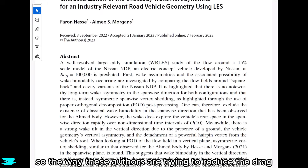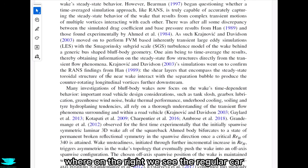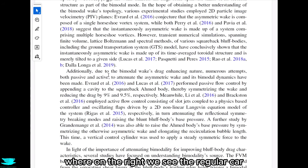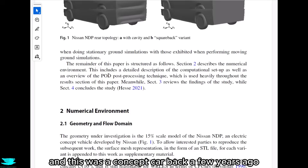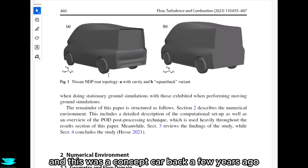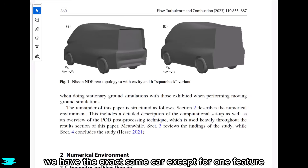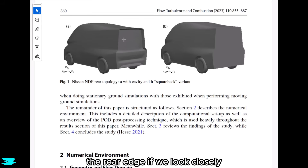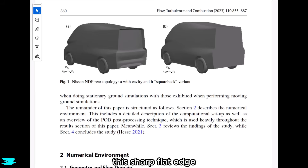The way these authors are trying to reduce the drag of this particular type of car can be seen in figure 1, where on the right we see the regular car — this is called the Nissan NDP, a concept car from a few years ago. On the left we have the exact same car, except for one feature: the rear edge. There's a very sharp extension out of the back, a sharp flat edge.